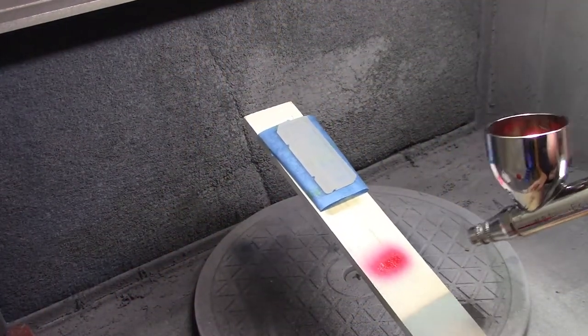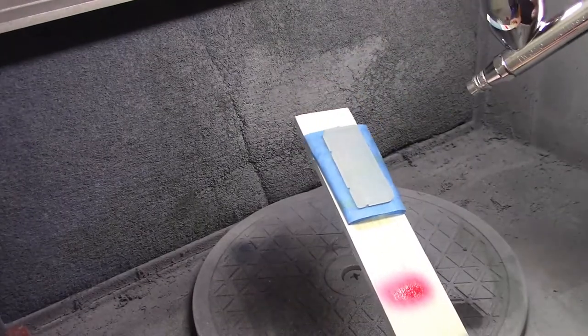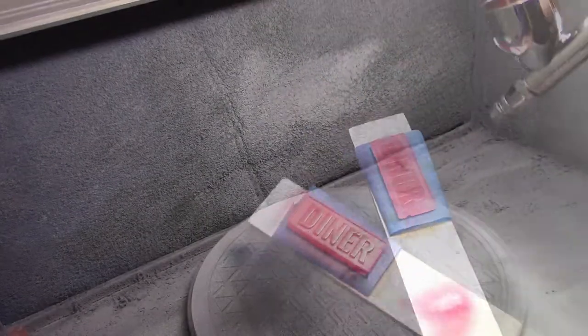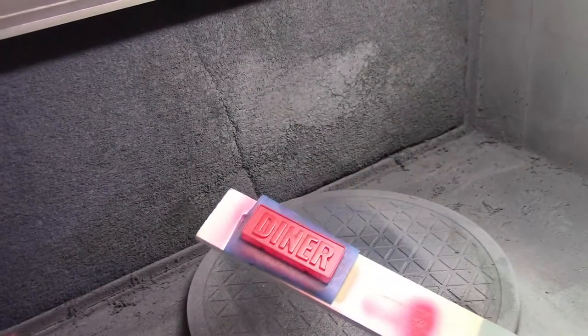After I am satisfied with the surface, I spray the entire sign red. I usually prime the surface first, although I would like to add LEDs to the back of the sign and only have the letters illuminate.